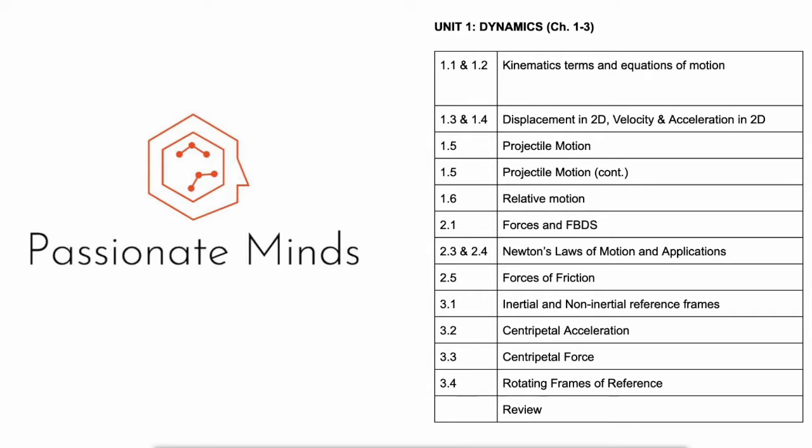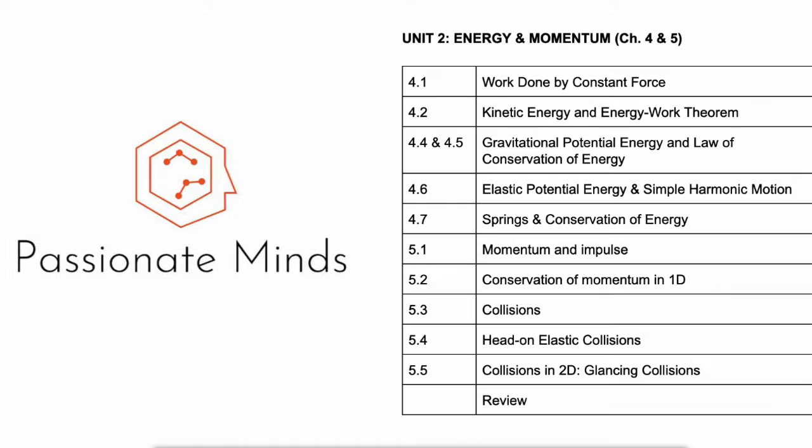And then lastly in this unit, chapter 3, which is uniform circular motion. We'll be talking about different reference frames, as well as what produces this uniform circular motion. Moving on to unit 2, which is energy and momentum, this covers chapter 4 and 5.